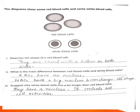Now question number six. The diagram shows some red blood cells and some white blood cells. Describe the shape of the red blood cell. Red blood cells are round with a hollow on both sides. What is the main difference between red blood cells and white blood cells? Red blood cells have no nucleus, but white blood cells have a nucleus and can change shape.